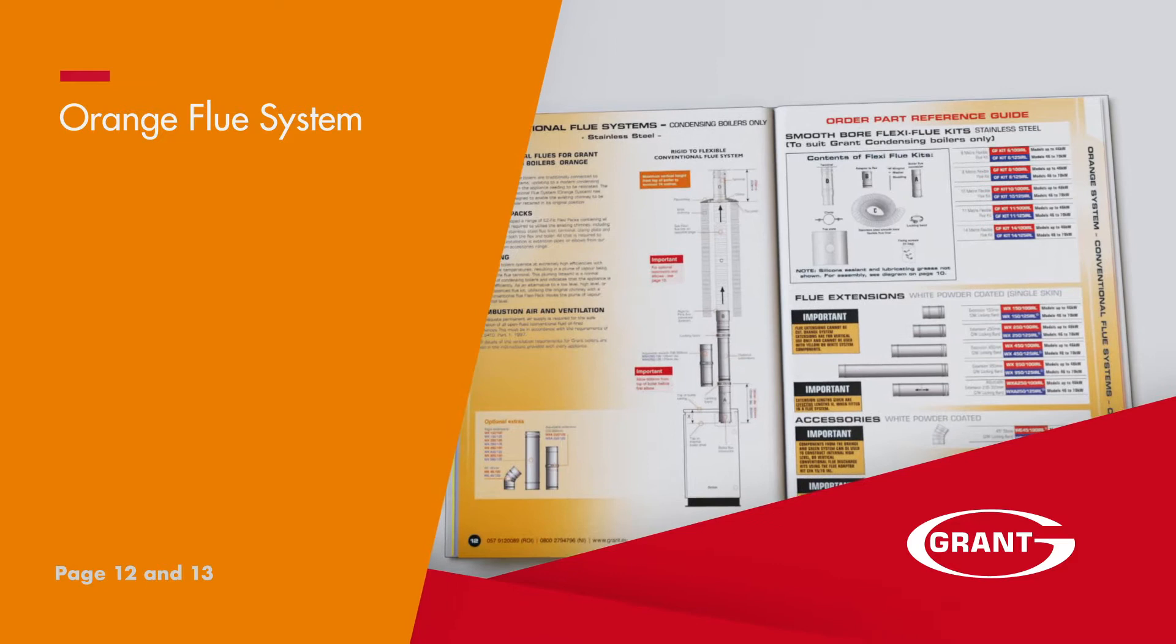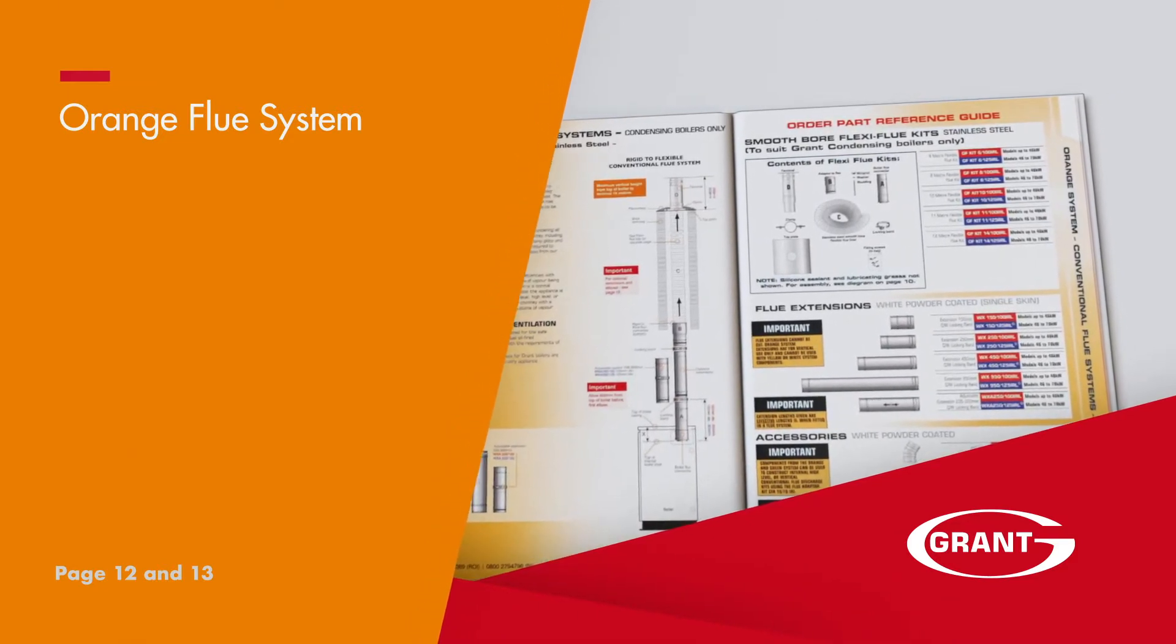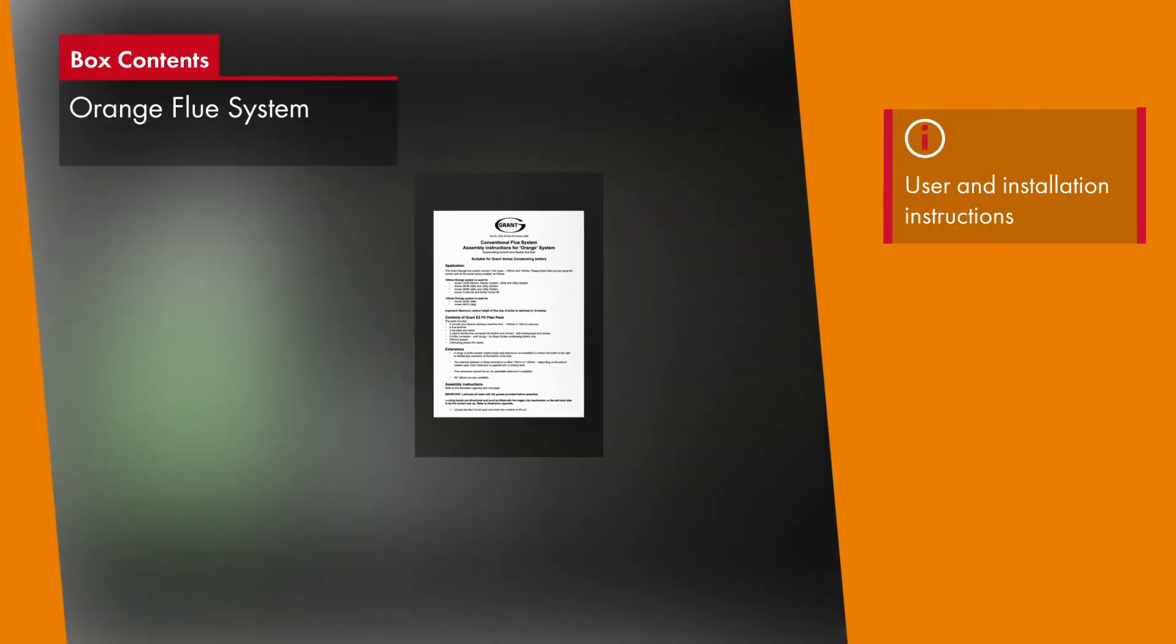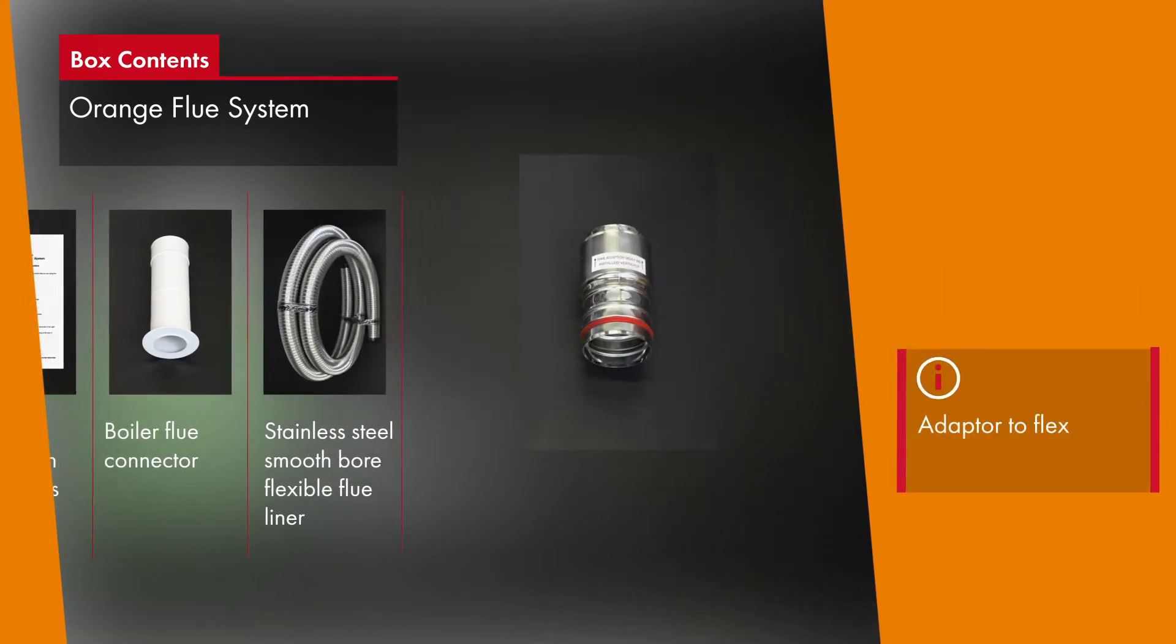Our existing flexi flue kits come in a range of lengths that you can find on page 13. The standard kit consists of the required length of smooth bore flexible stainless steel liner and an accessory box.